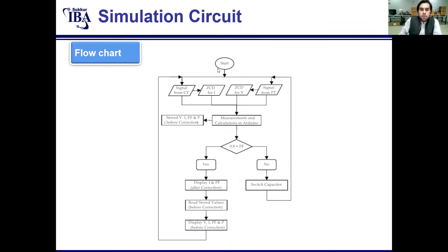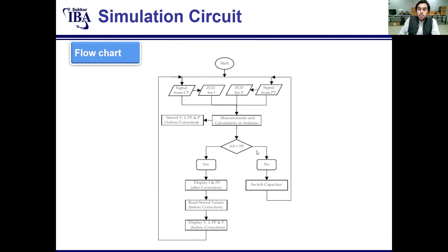Now the flowchart starts here. The signal from the CT and the signal from the PT both go to the ZCD. Both signals then go to the Arduino, where the power factor is calculated. The case is checked: is the power factor greater than 0.9? If this case is false, the relay module will switch the capacitor. If it is true — meaning power factor is already greater than 0.9 — then the power factor will be displayed on the LCD both before and after correction.